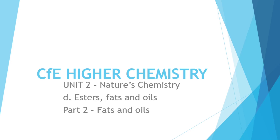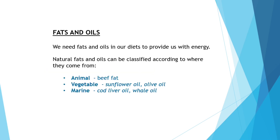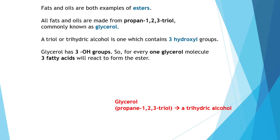Hello again, Higher Chemistry students. Here we will complete section D of unit 2 with part 2: fats and oils. Fats and oils provide the body with energy. Contrary to what you might think, you need fats and oils in your diet. There are three main areas from which we obtain fats or oils: animals, vegetables or plant sources, and marine life. Fats and oils are examples of esters.